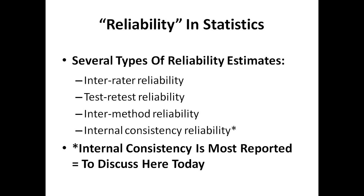There are several types of reliability estimates in statistics, and each one is a subject in itself. There's inter-rater reliability, test-retest reliability, inter-method reliability, and internal consistency reliability. You can see by the asterisk that internal consistency is the most reported, so that's what we'll discuss here today.